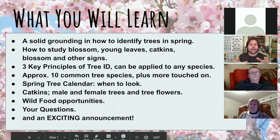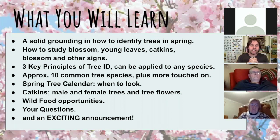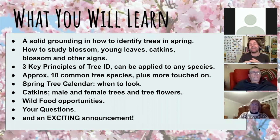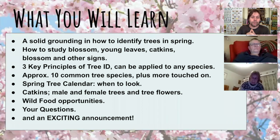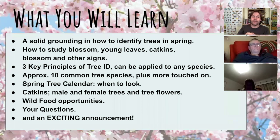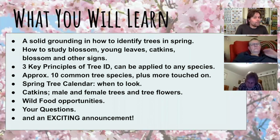Tonight we're going to get a solid grounding in how to identify trees in spring. We're going to be looking at things like blossom, young leaves, catkins, flowers and other signs. I'll briefly go over my three key principles of tree ID which can be applied to any species, and we're going to cover about ten species in detail. We're going to talk about the spring tree calendar — not only what to look for in spring but when to look for it and what's happening over March, April and May.